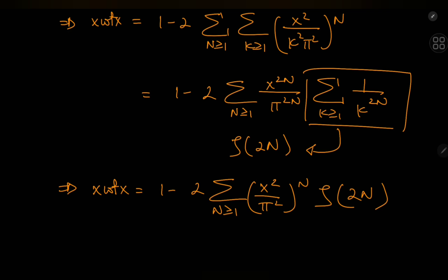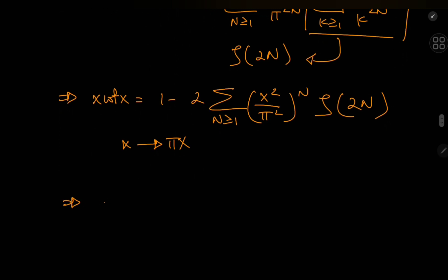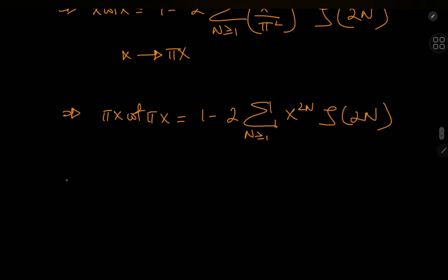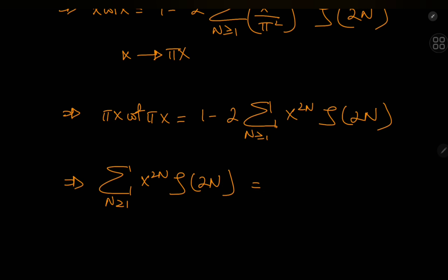It would be nice to get rid of the π² term in the denominator, so let's perform a substitution from x to πx. In that case, πx·cot(πx) equals 1 minus twice the sum over n of x^(2n)·ζ(2n), since the π² terms cancel. Rearranging, the sum over positive integers n of x^(2n)·ζ(2n) equals one half of (1 minus π·cot(πx)).